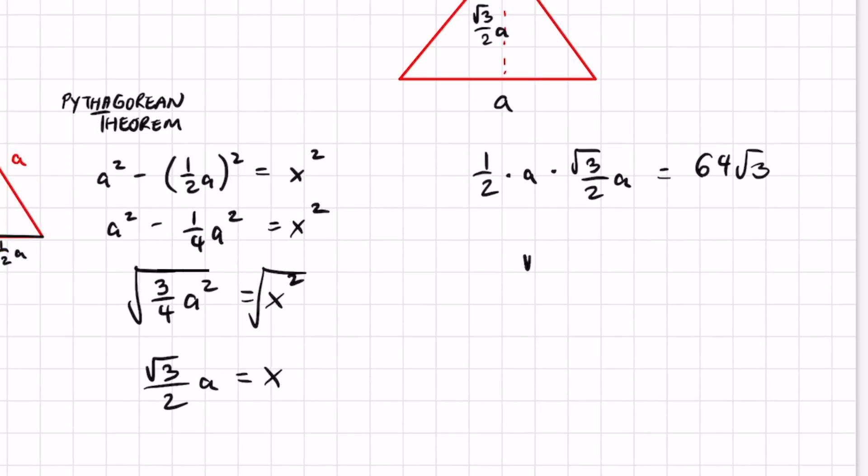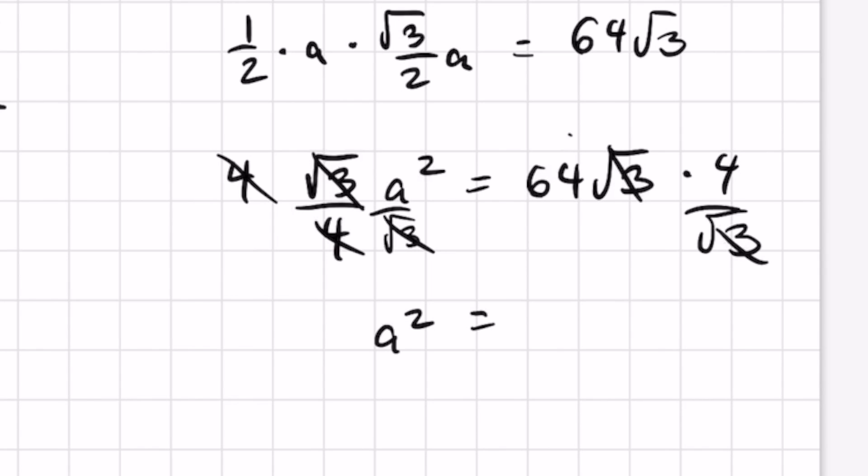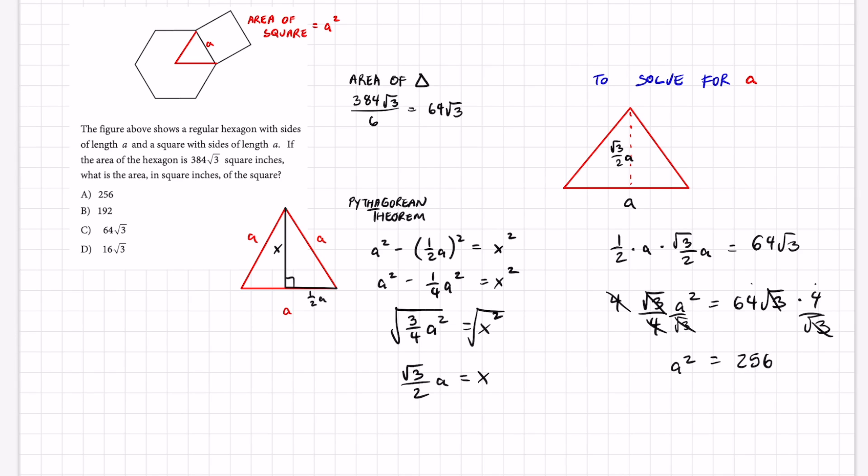Simplifying this we get square root of three over four A squared equals 64 root three. Multiply both sides by four, that's going to cancel that out, and then divide by square root of three, that's going to cancel that out. I'm going to be left with A squared equals, root three isn't going to cancel, 64 times four equals 256, but don't square root it. Don't square root it because A squared represents the area of your square which is answer choice A.